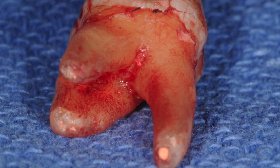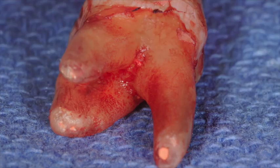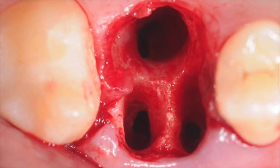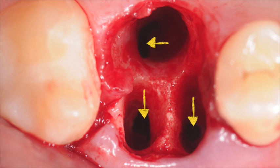The tooth was extracted atraumatically, and immediately following the extraction, inspection of the extraction site revealed three distinct openings into the sinus — one in each root position.